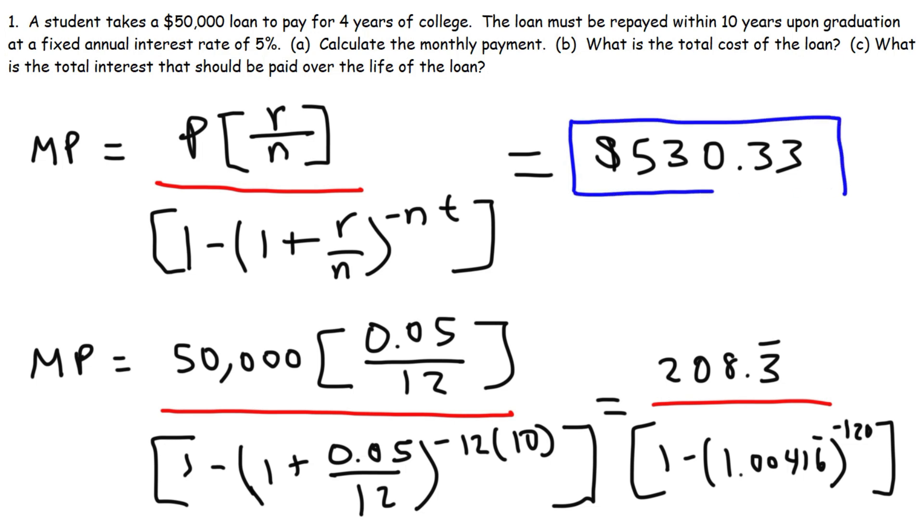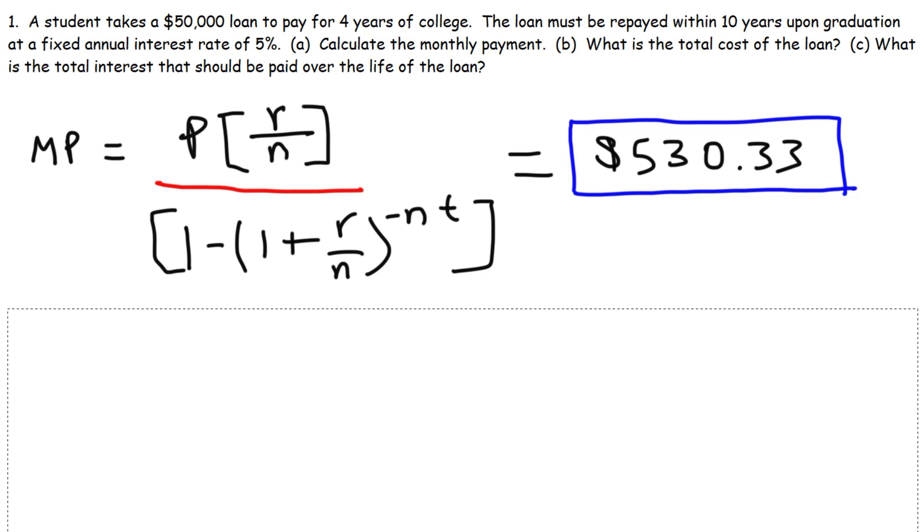So that's going to be the monthly payment that this particular student will have to pay right after graduation for 10 years. So that's the answer for part A. Now let's move on to part B.